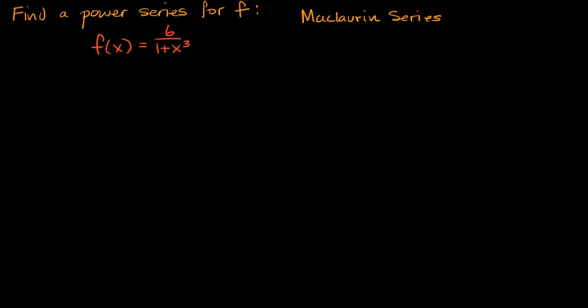You could do a simplification where you say, let me find the Maclaurin series for f(u) = 6/(1+u), where u = x³, so you find this Maclaurin expansion in terms of u, and then you substitute for x³, and that makes it a good bit simpler, so that is another way to approach it.